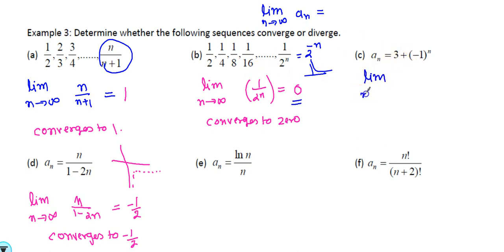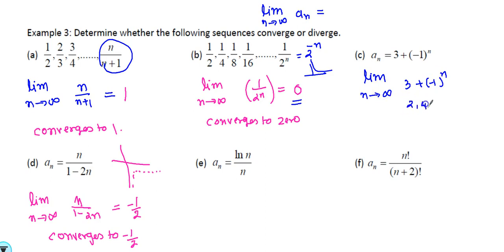Limit as n→∞ of 3 + (−1)^n: anytime you are not sure what's happening, substitute n values. You can see this gives 2, 4, 2, 4, and onwards, so this one diverges by oscillation.